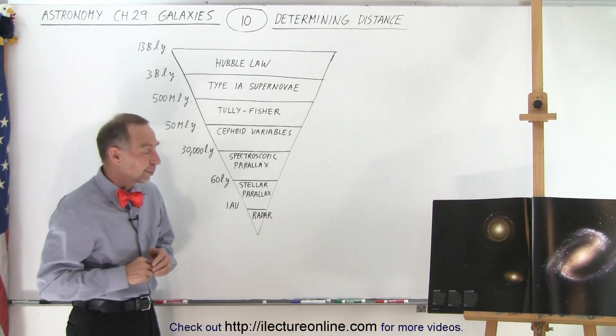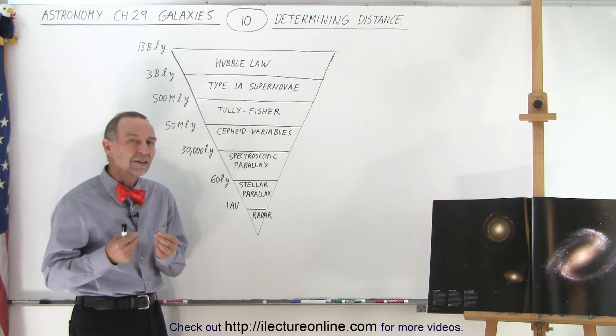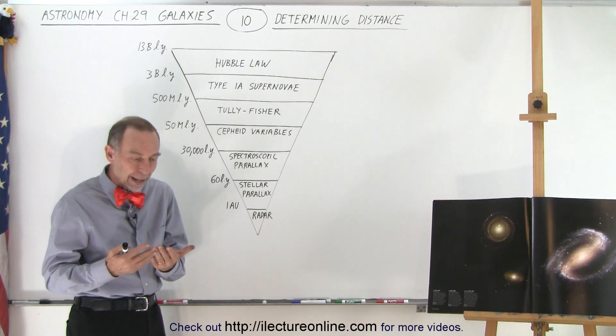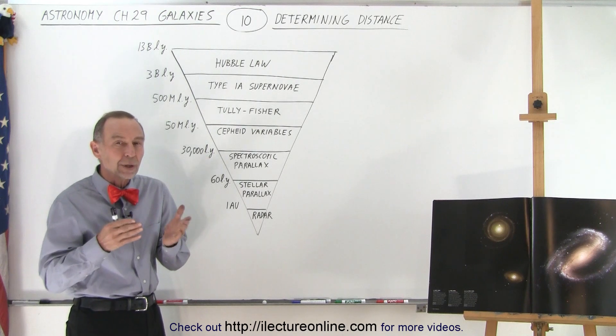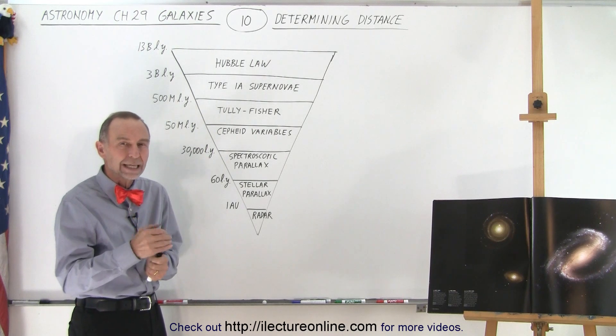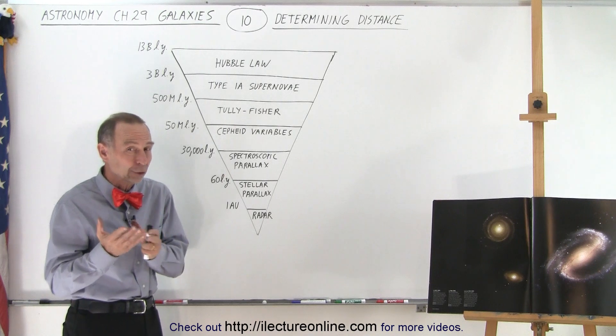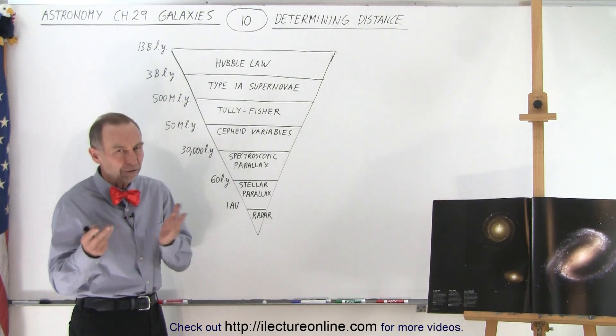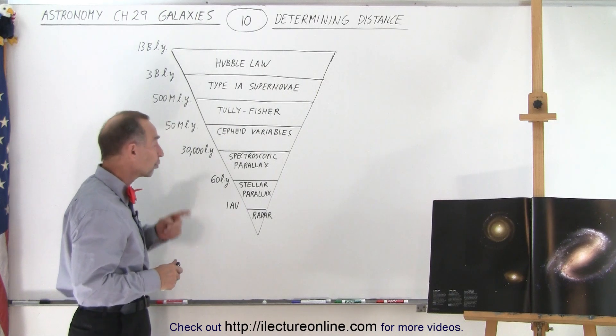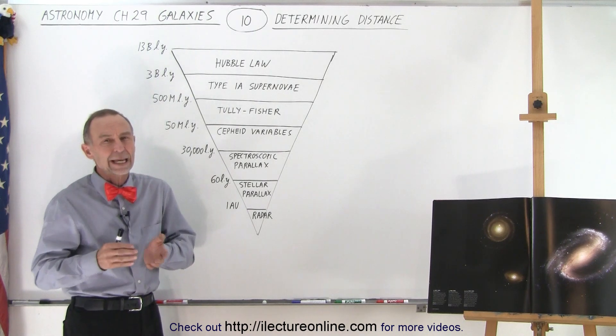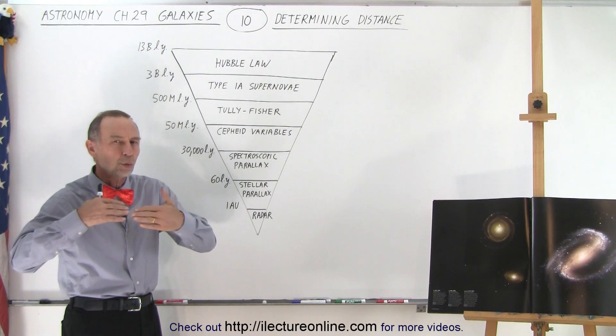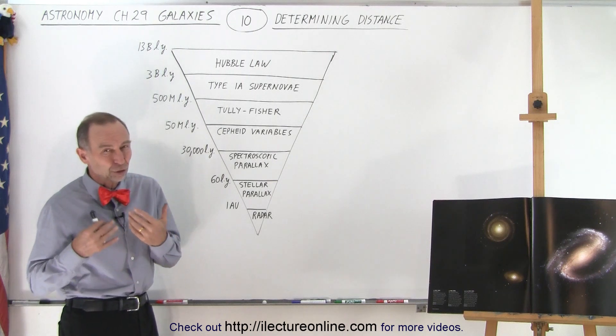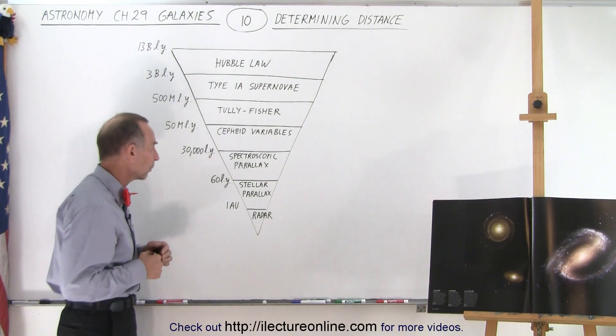Spectroscopic parallax is not really a method of parallax. It uses the H.R. diagram and the various colors and star types that we can observe. We can determine the intrinsic brightness of these stars by looking at their colors using filters, then measure the apparent brightness, and from that calculate the distance. That's good to about 30,000 light years, but only for stars in our own galaxy. We cannot use this method for stars in other galaxies - they're just too far away.